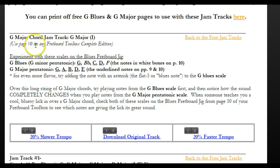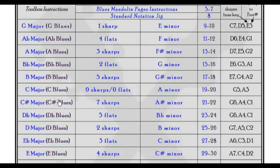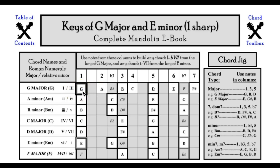To start out, we're looking at the G major chord jam track and we'll use the Toolbox to compare the G major scale and the G blues page. The Toolbox has pages for all the different keys so you can visualize these ideas in every key. The G major scale uses the notes in the 1, 2, 3, 4, 5, 6, and 7 columns: G, A, B, C, D, E, and F sharp. That one sharp is why sheet music shows G major as the key with one sharp.